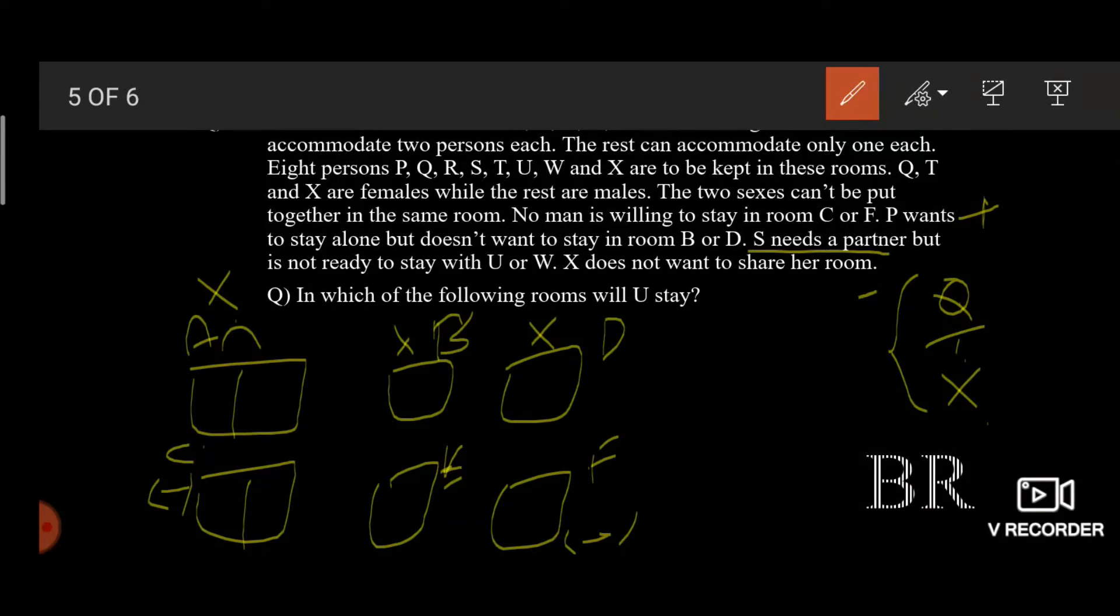S needs a partner but is not ready to stay with U or X. So from this data we can conclude that S is a male and he must be in A because he wants to be with a partner which cannot be U or W. X does not want to share her room. As X does not want to share her room and she being a female, there is only one room left which is F.